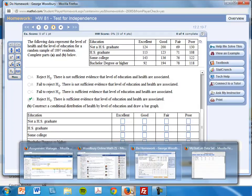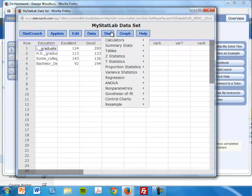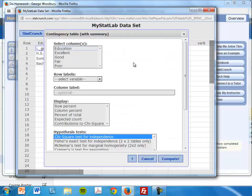I'm going to reopen the StatCrunch window because I can get this directly from StatCrunch. I go through the same procedure: Stat, Tables, Contingency with Summary.